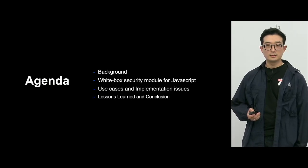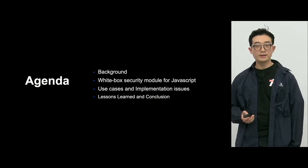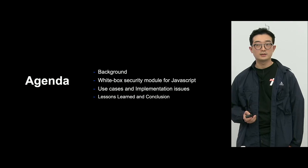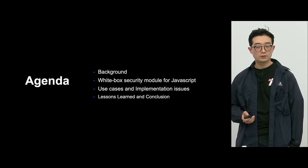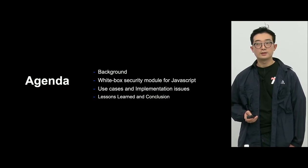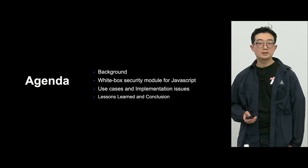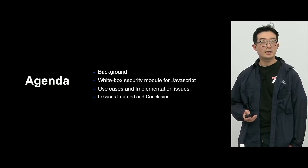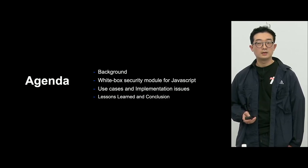The rest of the talk will cover: first, the background on why we needed security modules for LINE services; then the problems we faced in web applications including Chrome extensions; then our White Box security module, the technology stack and threat model we considered, and why we chose White Box Cryptography and WebAssembly; how we implemented the module, implementation issues we encountered, and its use cases. I will conclude by sharing the lessons we learned.